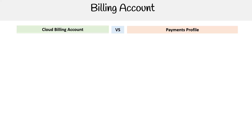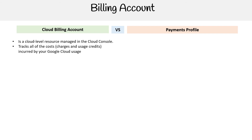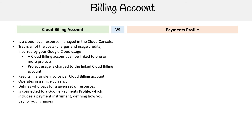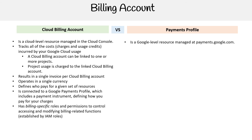Let's compare the two so that we fully understand these two offerings. For Cloud Billing Account: it is a cloud-level resource managed in the Google Cloud console, tracks all of the costs, charges, and usage credits incurred by Google Cloud usage. A Cloud Billing Account can be linked to one or more projects; project usage is charged to the linked billing account, resulting in a single invoice per Cloud Billing Account. It operates in a single currency, defines who pays for a given set of resources, is connected to a Google Payments Profile which includes payment instructions defining how you pay for charges, and has billing-specific roles and permissions to control accessing and modifying billing-related functions.